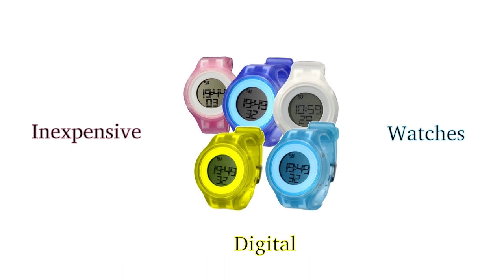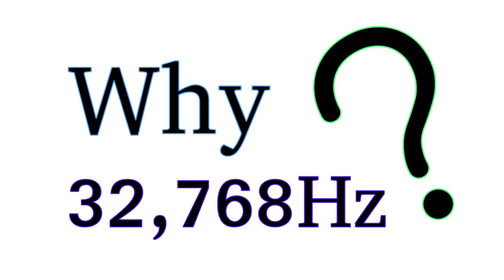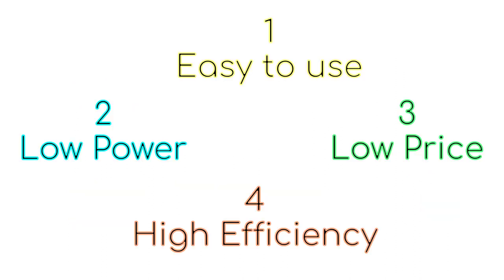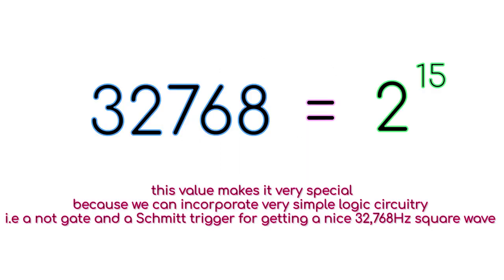The reason behind using a 32.768 kilohertz crystal is very simple. We want an easy to use, low power, low price, high efficiency oscillating device, and the 32.768 kilohertz crystal fills all the gaps as its value is equal to 2 to the power 15, which makes it easy to use.